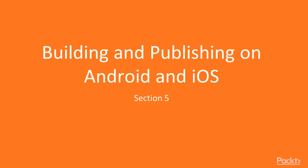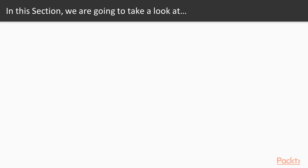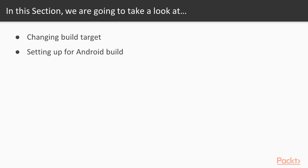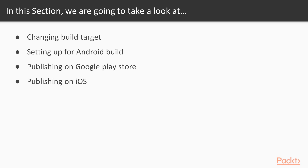Welcome to Section 5: Building and Publishing on Android and iOS. In this section, we're going to learn how we can change our build targets and build for different platforms. Then we're going to learn how to set up our project for an Android build, how we can publish on Google Play Store, and finally how we can publish our app on iOS. So let's get started.